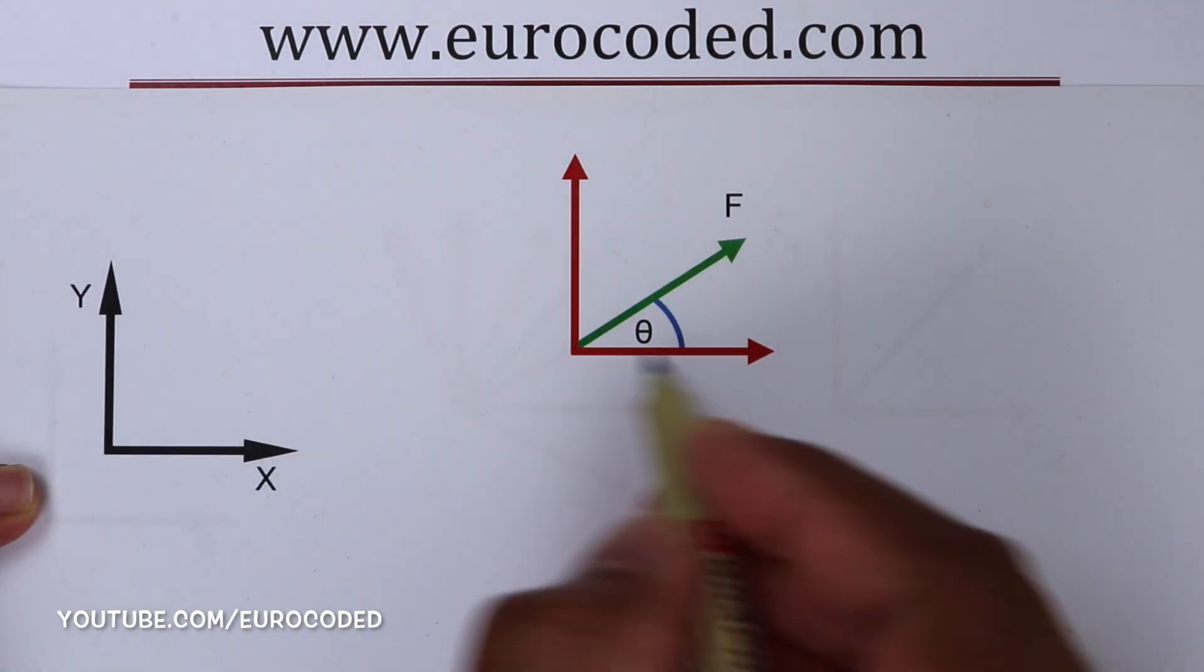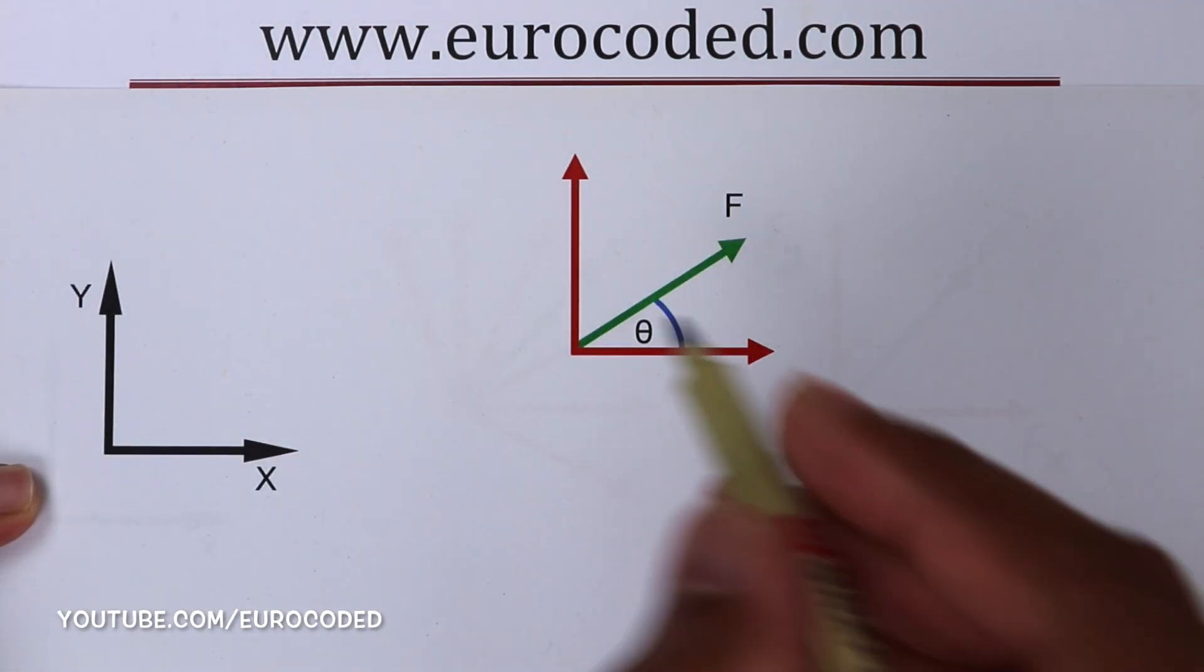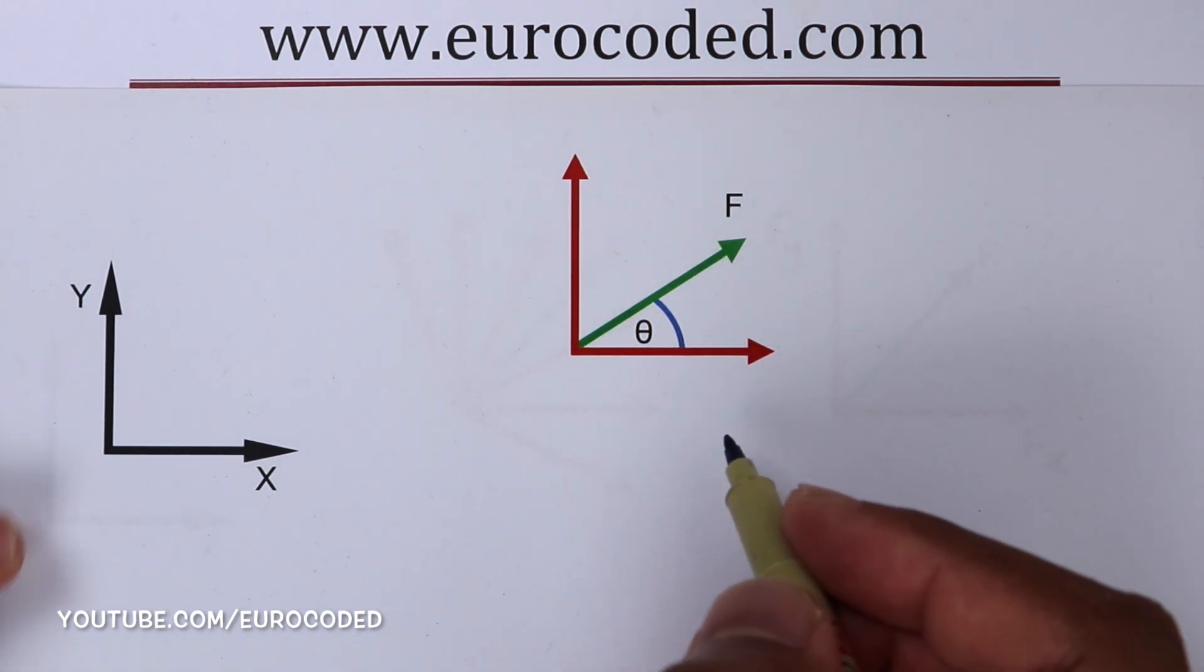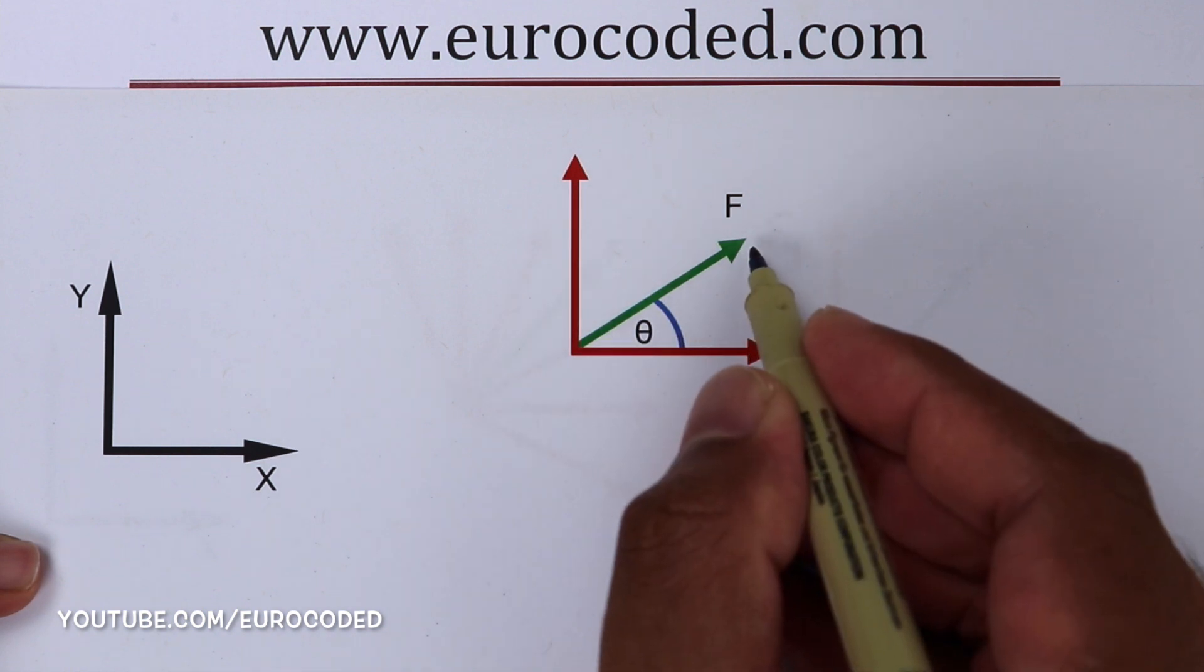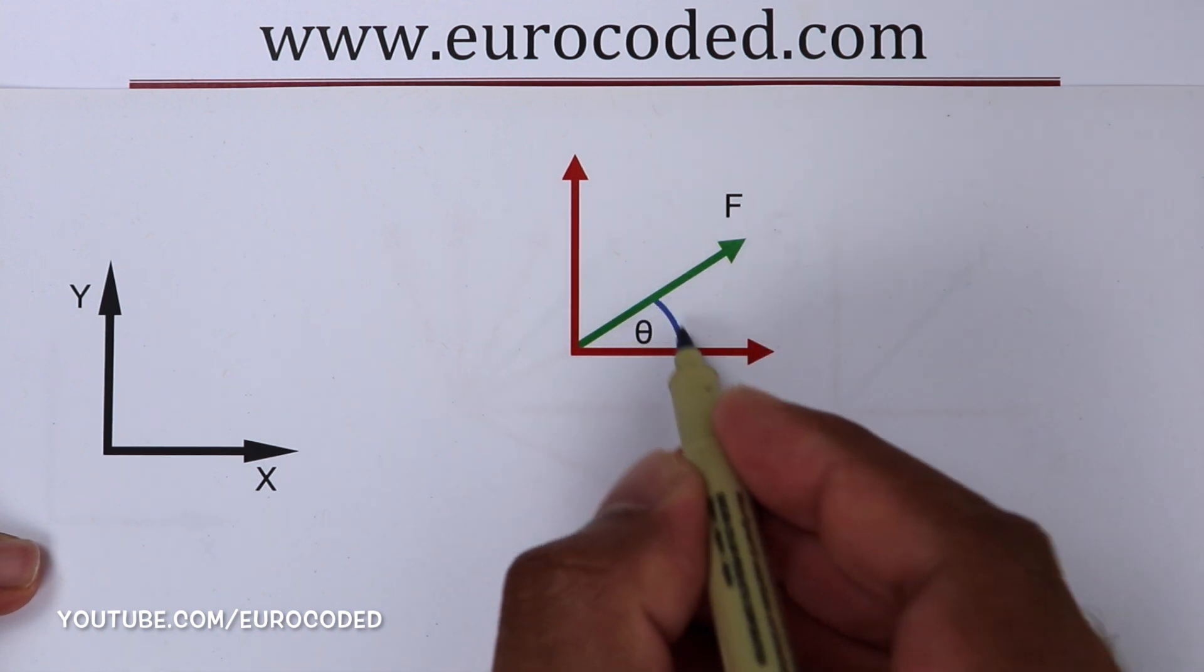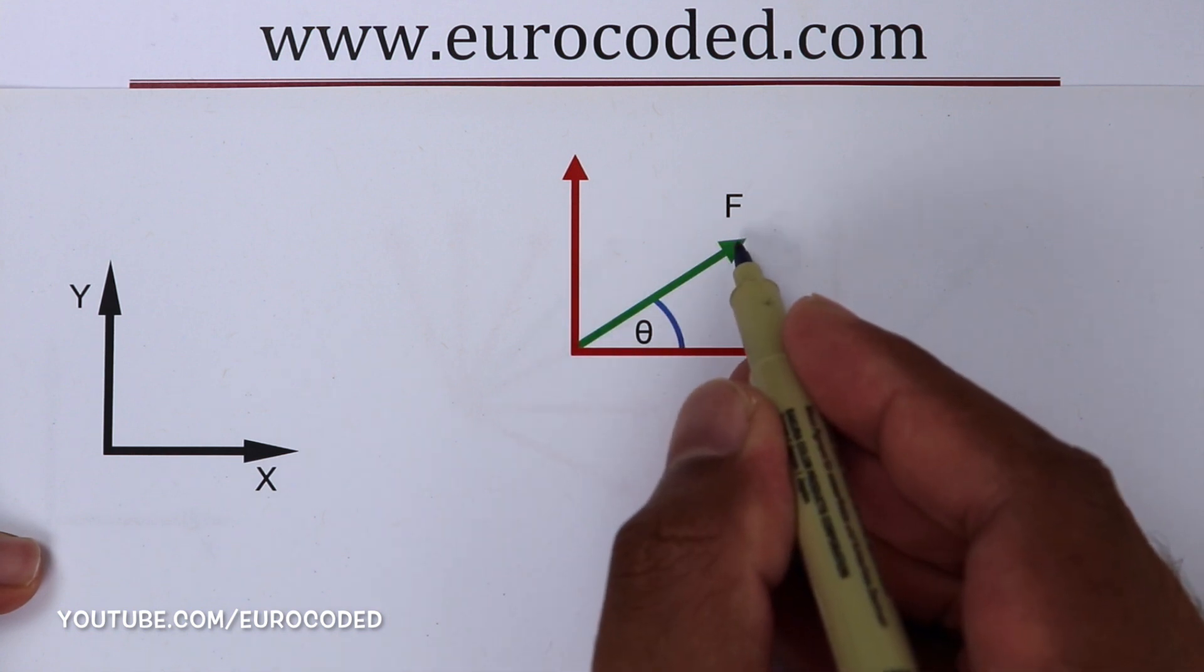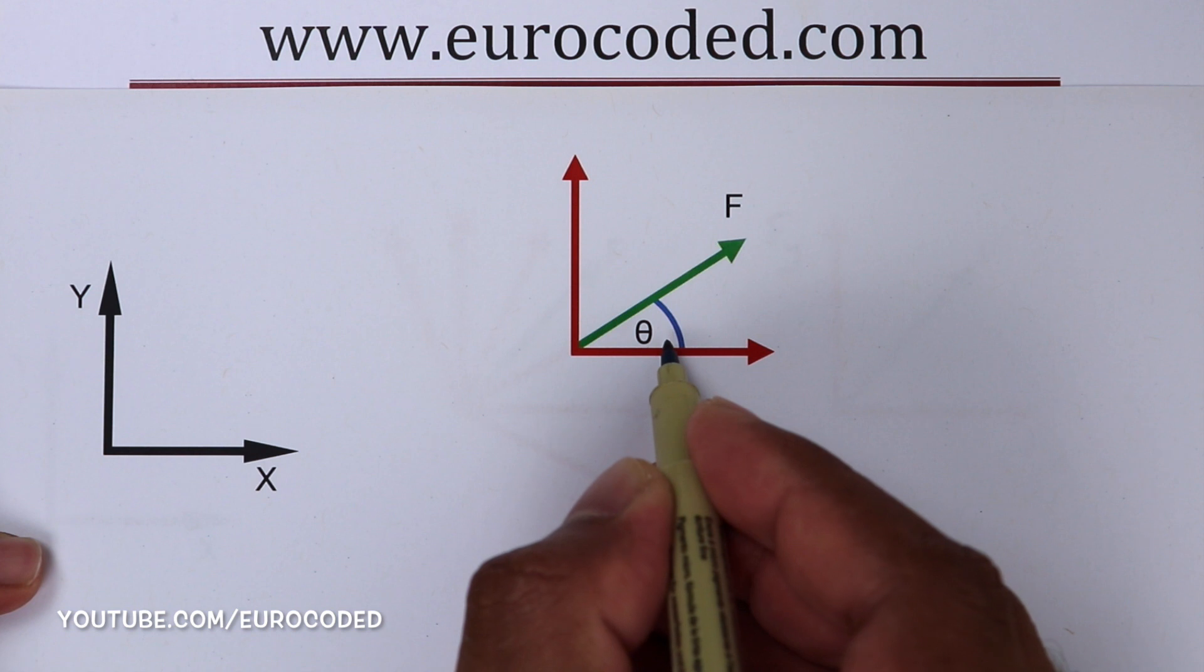We can find the rectangular components either graphically, where the force is shown as a vector, or algebraically. We have a force F here, and the angle between the direction or the sense of this force and the X axis is theta.